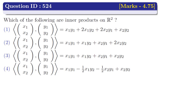Option 2: the inner product of (x1, x2) with (y1, y2) is equal to x1·y1 + x1·y2 + x2·y1 + 2·x2·y2. Option 3: the inner product of (x1, x2) with (y1, y2) is equal to x1·y1 + x1·y2 + x2·y1 + x2·y2.